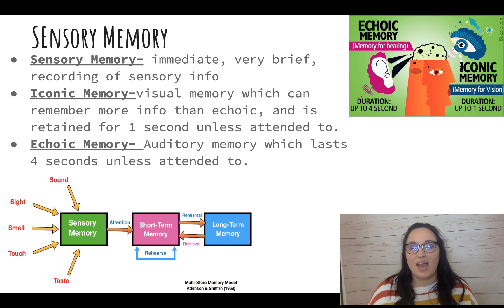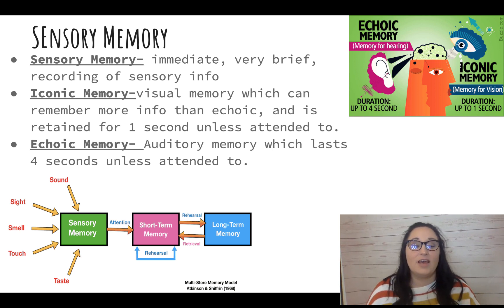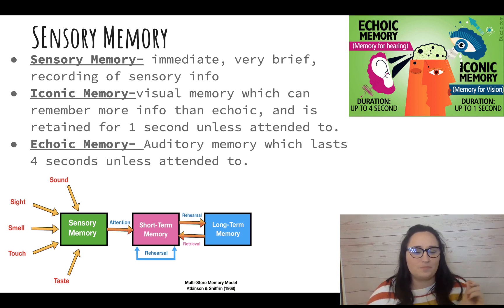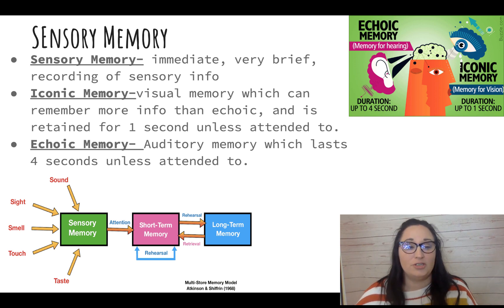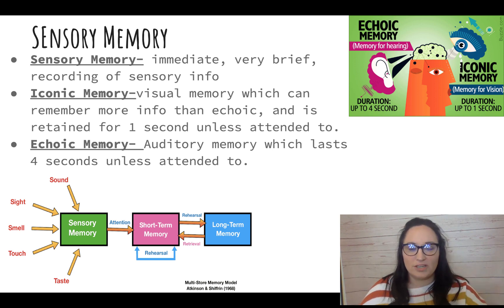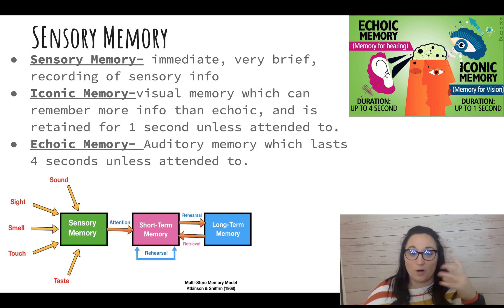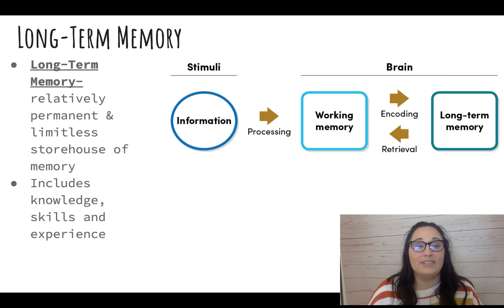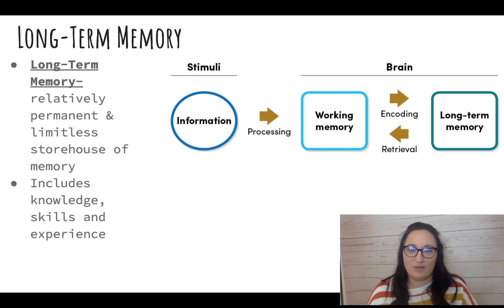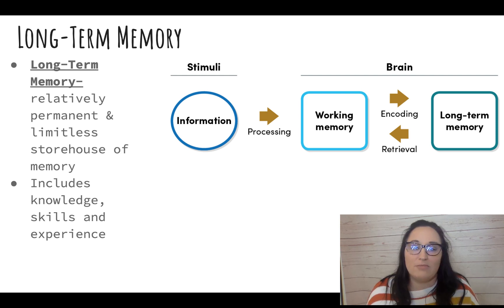Any sort of sensory information can last more than one or four seconds if it is attended to. If you pay attention to something you are seeing because it's visually appealing or emotionally charged, then you're thinking about it and remembering it longer — it's in your short-term working memory. Our long-term memory is permanent and limitless. There is no maximum amount of memory we can have, unlike computers and iPhones, and it can be permanent for our whole life.